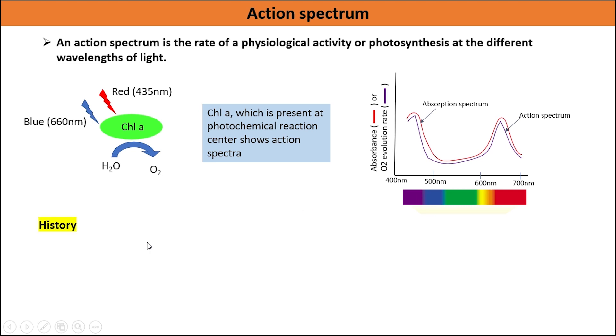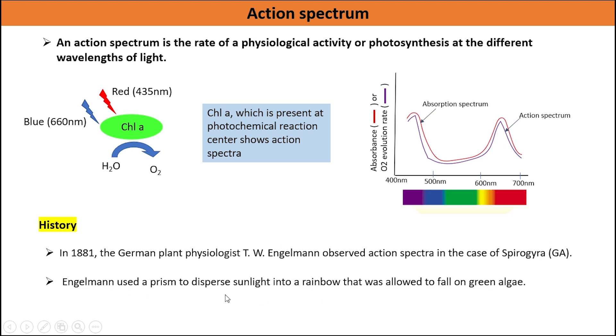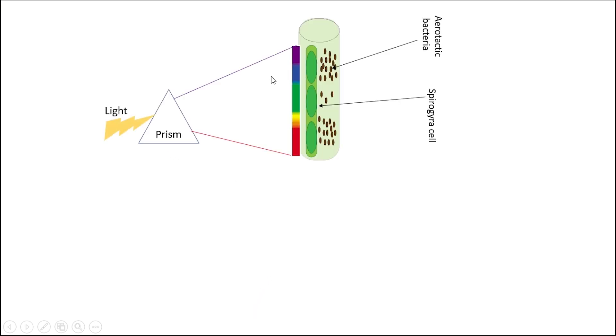Let's learn the history of action spectrum. In 1881, the German plant physiologist T.W. Engelmann observed action spectra in the case of spirogyra. Engelmann took motile aerobic bacteria and spirogyra in a transparent test tube. Spirogyra is green algae and releases oxygen in the light.